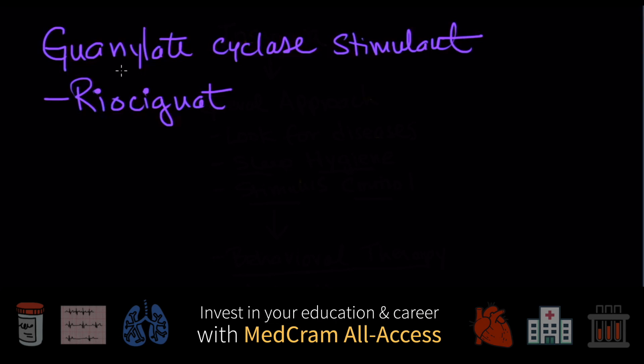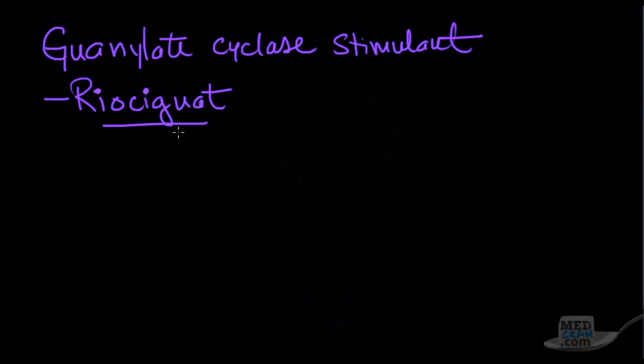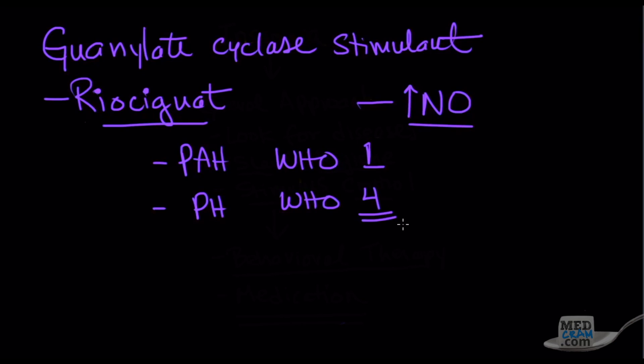The last mechanism we're going to look at is the guanylate cyclase direct stimulants, and riociguat is the medication that is FDA approved to do this. It's a direct stimulator of the nitric oxide receptor, so it increases nitric oxide just like the phosphodiesterase inhibitors do, but they do it in a different way with a dual mode of action. Not only do they increase the nitric oxide receptor, they also increase the sensitivity of the soluble guanylate cyclase to endogenous nitric oxide, which is a pulmonary vasodilator. Not only is it approved in WHO group number one, but it's also approved for WHO group number four, which is the chronic thromboembolic disease.